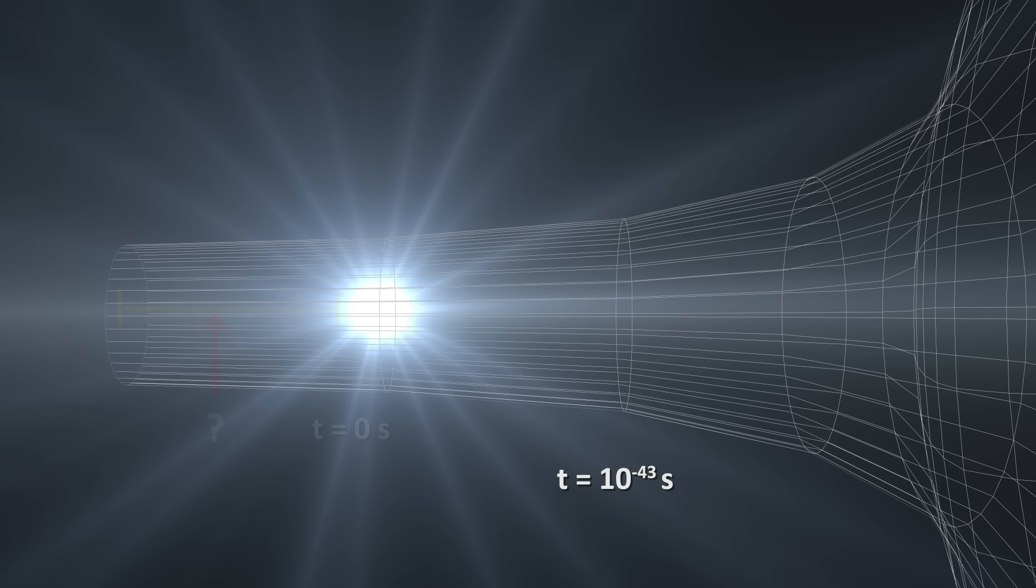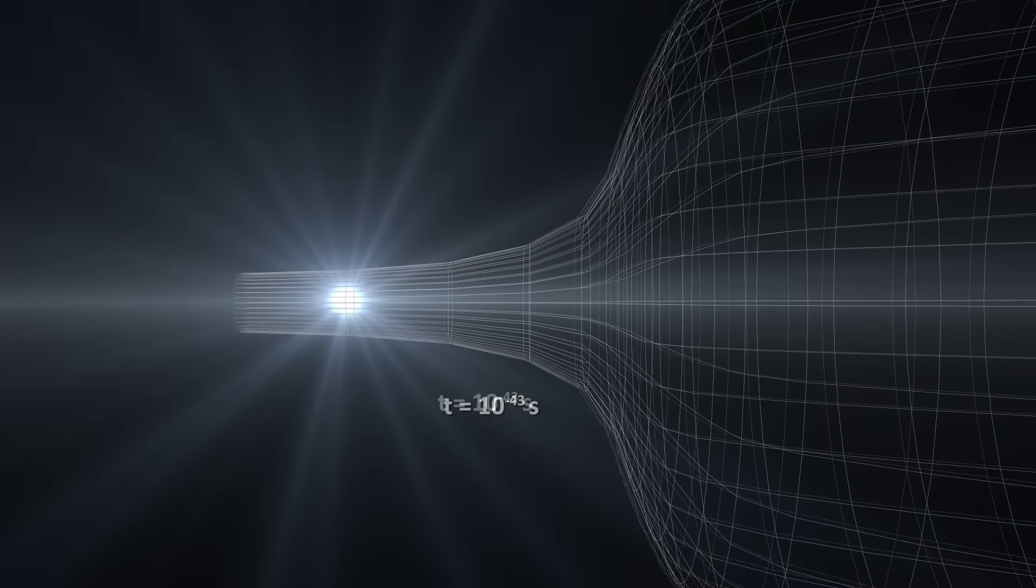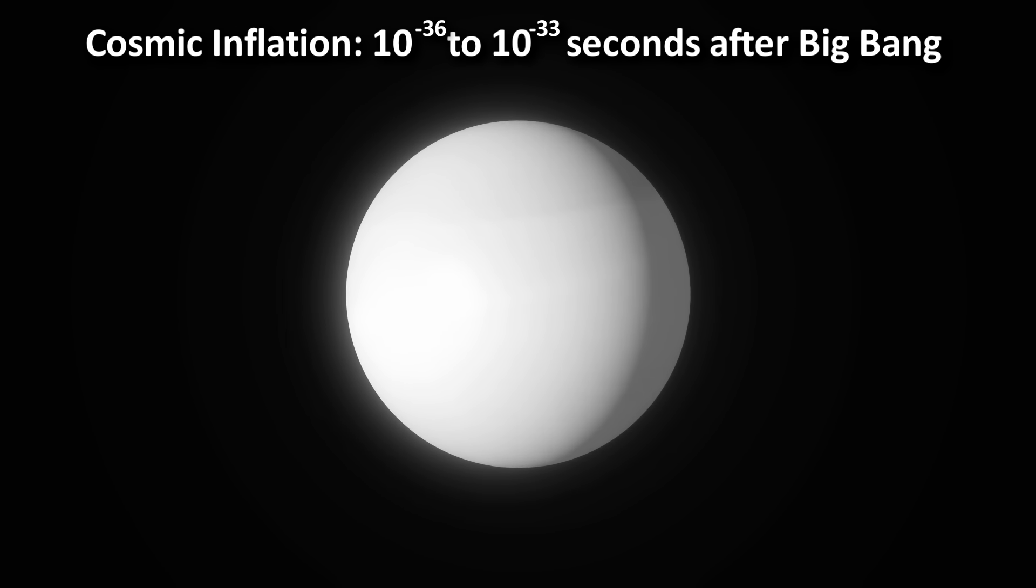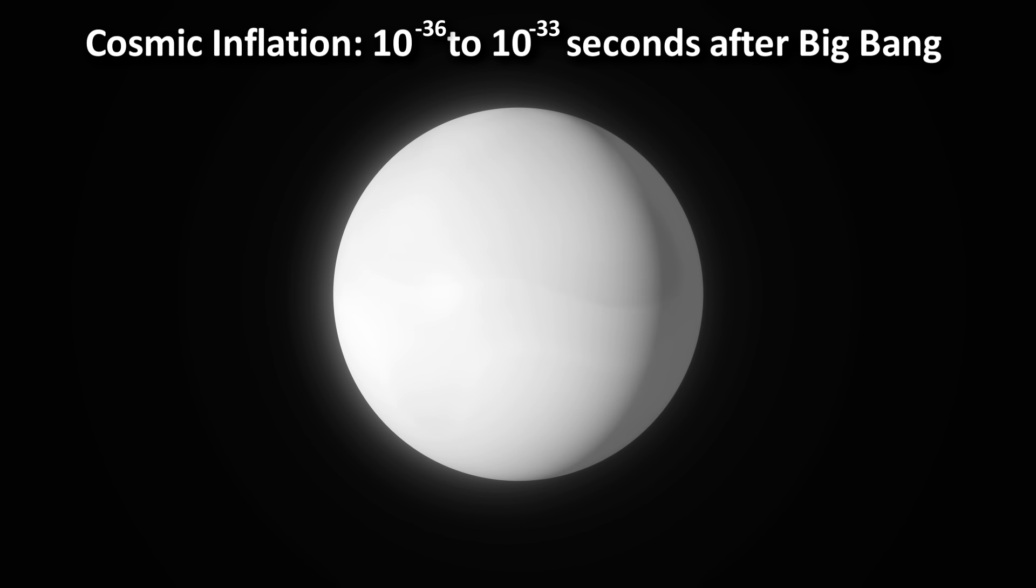The earliest time that we can theorize what happened is around the time of inflation. This happened from about 10 to the negative 36 seconds to about 10 to the negative 33 seconds after the big bang. This is when whatever existed prior to this time, let's call it the singularity for convenience, grew exponentially fast. Faster than the speed of light. This is permissible because there is no theoretical restriction on how fast space can expand. It grew from a point to about the size of a large orange.